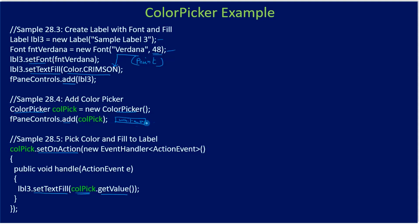So we create the color picker, add it to the FlowPane which displays a combo box, and handle the event when the user interacts with it. When the user clicks it, the color picker dialog is displayed; the user can pick a color and we handle the interaction event, get the value, and set the color to the label. When the user picks a color from the swatch, it gets assigned to setTextFill() immediately.